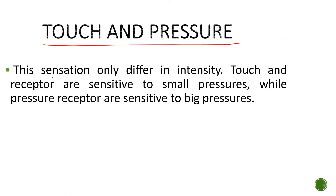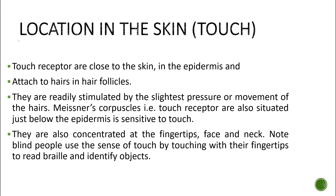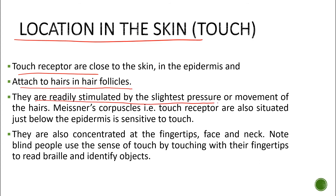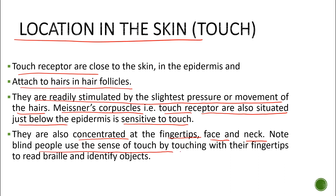Touch and pressure sensations only differ in intensity. Touch receptors are sensitive to small pressures while pressure receptors are sensitive to large pressures. Touch receptors are close to the skin surface, attached to skin hairs and follicles, and are readily stimulated by the slightest pressure or movement of the hairs. Meissner's corpuscles are just below the epidermis and are concentrated at the fingertips, the face, and the neck. Note that blind people use the sense of touch with their fingertips to read braille and identify objects.